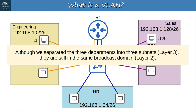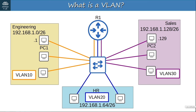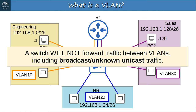One possible solution is to buy a separate switch for each department. However, that is not very flexible, and network equipment isn't cheap, so buying switches for every department could be too expensive, especially for a small enterprise. This is where VLANs come in. Although these PCs are all in the same LAN, we can use VLANs — Virtual Local Area Networks — to separate them at layer 2. We'll assign the engineering department to VLAN 10, the HR department to VLAN 20, and the sales department to VLAN 30. We configure VLANs on the switch interfaces, and the end host connected to that interface becomes part of that VLAN. The switch will consider each VLAN as a separate LAN and will not forward traffic between VLANs, including broadcast or unknown unicast traffic.